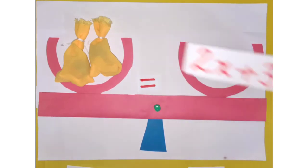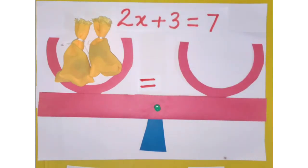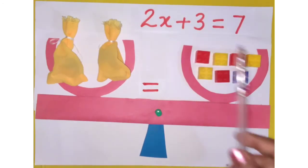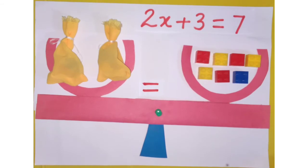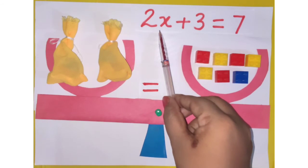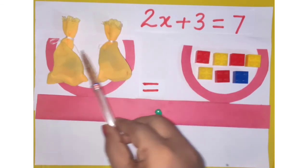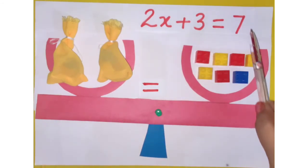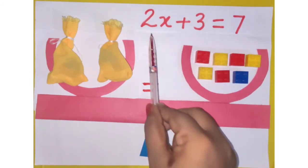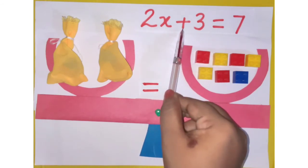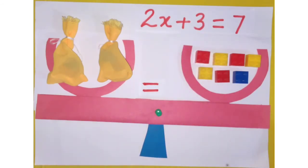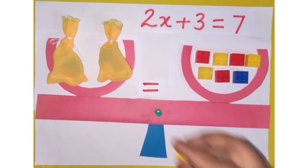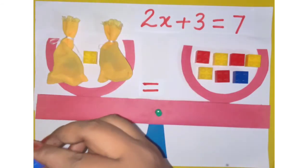Let us solve the equation: 2x plus 3 equals 7, using the balance scale. On the left-hand side we have 2x, represented by two bags each labeled x, so x plus x is 2x. On the right-hand side we have 7, represented by 7 blocks. What is missing from the left-hand side is plus 3, so I add 3 blocks here.